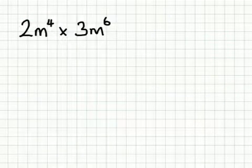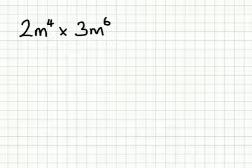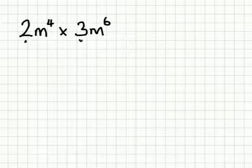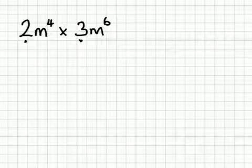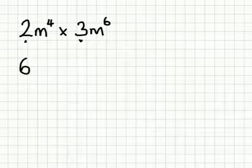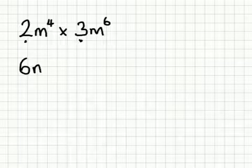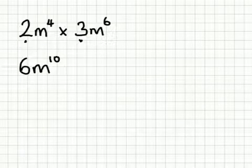Taking this idea one step further is if you had a sum that looked like this. In this case, what you do is you look at the numbers before the letters, the 2 and the 3, and you do it as normal. So 2 times 3 gives me 6. And then you treat the letters the same way as I've just shown you before. So m to the power 4 times m to the power 6 gives me m to the power 10.